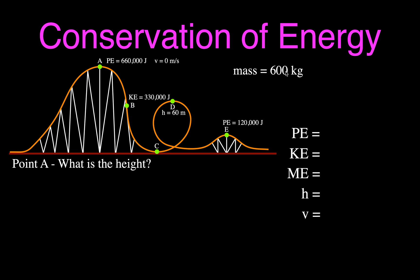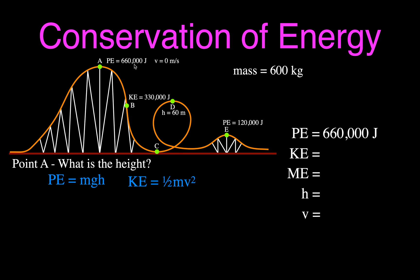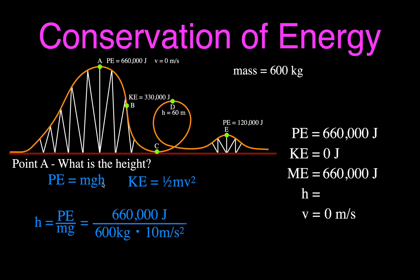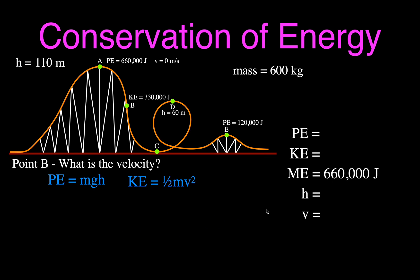For point A on the roller coaster: the potential energy is given as 660,000 joules. The car has no velocity at the top, so kinetic energy is zero. The mechanical energy is 660,000 plus zero, which equals 660,000 joules. To calculate the height, we rearrange the potential energy equation: height equals potential energy divided by mass times g. That's 660,000 divided by 600 times 10, giving a height of 110 meters at point A.